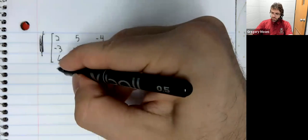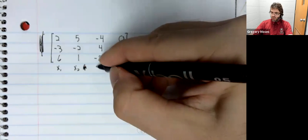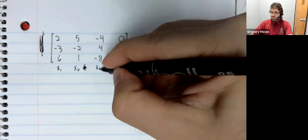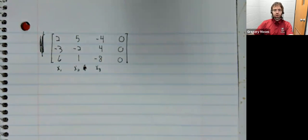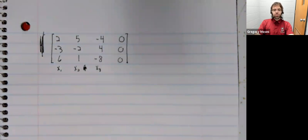Remember that each of these first three columns corresponds to a variable. And variables are free or basic, depending on whether these columns contain pivot positions. And it's to figure out where the pivot positions are that we have to perform this elimination.